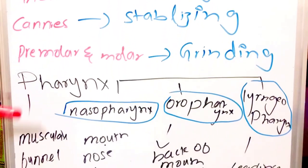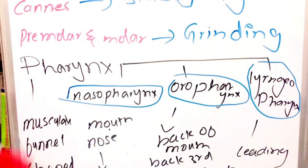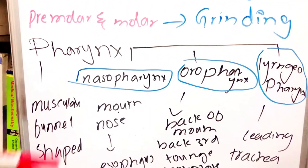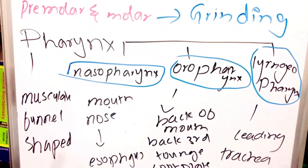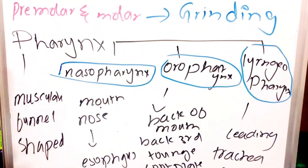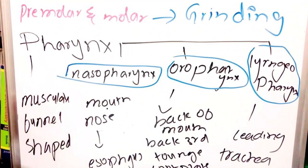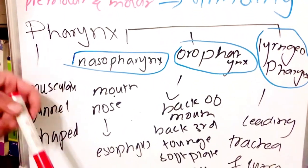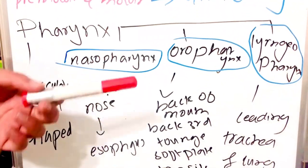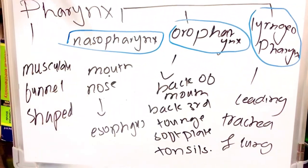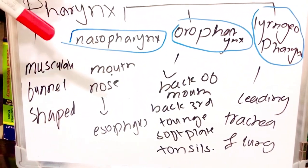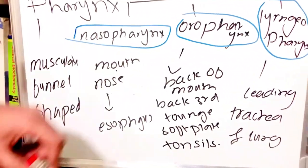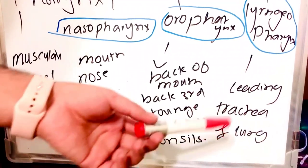Our next part is the pharynx. We have three types: nasopharynx, oropharynx, and laryngopharynx. The pharynx is a muscular, funnel-shaped organ. The nasopharynx starts from the nose down to the esophagus. The oropharynx starts from the back of the mouth — specifically the back third of the tongue — and includes the soft palate and tonsils. The laryngopharynx leads to the trachea and the lungs.